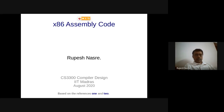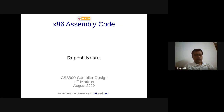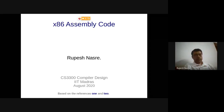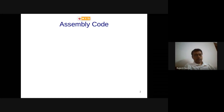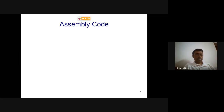For Assignment 3, you require some knowledge of x86 assembly code. These slides will give you at least a good start with respect to understanding assembly code and thereby generating some assembly instructions from your IR. The assembly code is somewhere in between the IR and the target machine code, but very close to the target machine code.